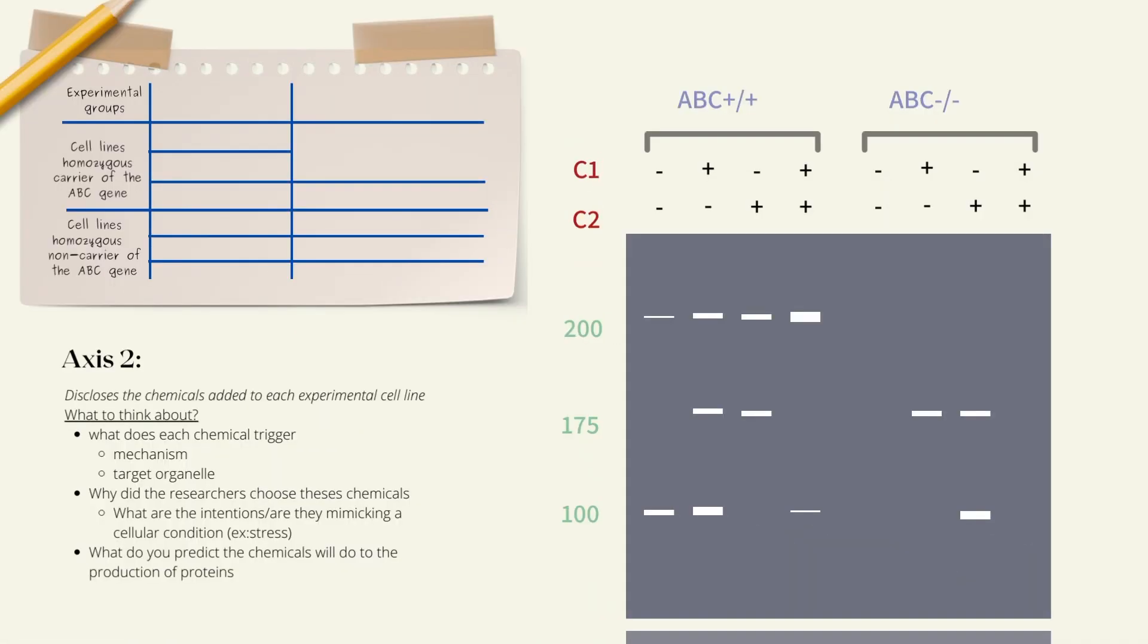Now moving on to axis number two, or what I like to call the chemical gateway to heaven. Here the readers will learn about what chemicals are being added to the cell. Now it's important to think about how your chemicals might affect the cell's protein production. Will it favor protein production of protein A versus protein X are some questions you can ask yourself. Here the control lane refers to the cell with no chemicals added. Here we get to see what the cell's normal behavior or its natural protein producing state is. But when we look over here, researchers are adding both chemicals.